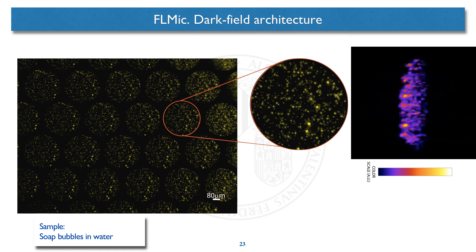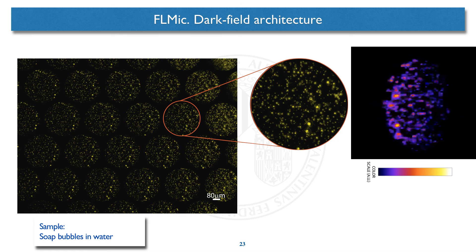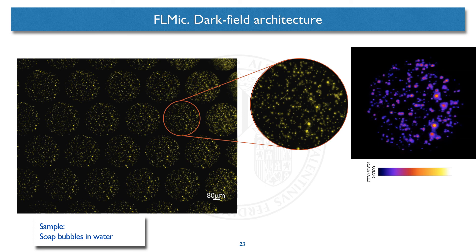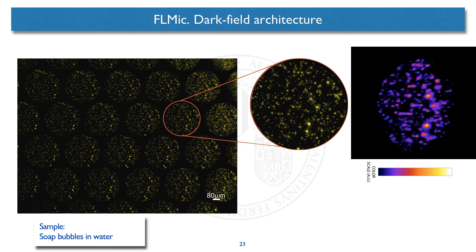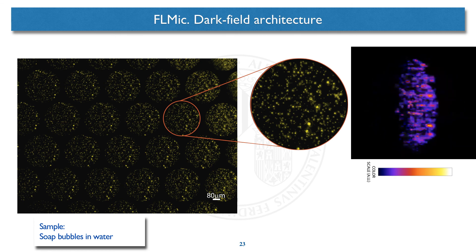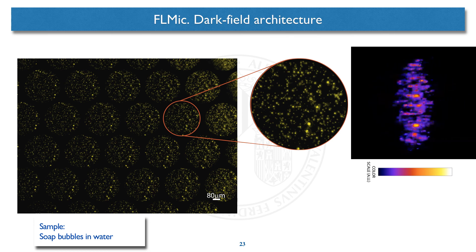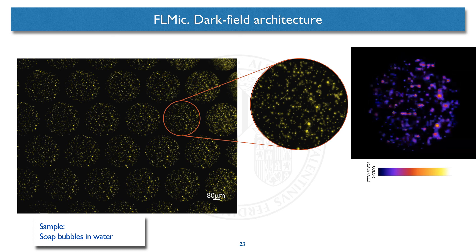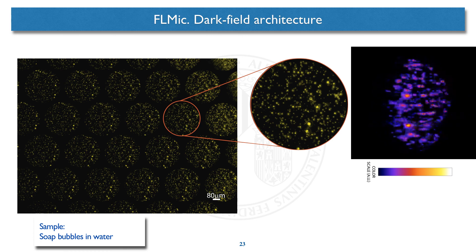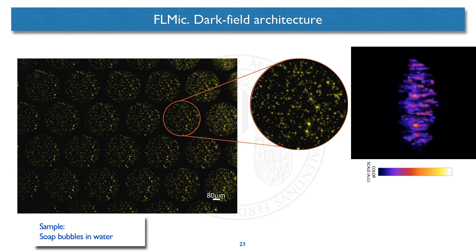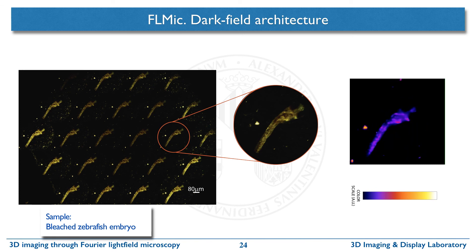As an example of combining dark field and Fourier light field imaging, here we show the result of using a ring illuminator matched with the aperture stop of the native microscope, when our plenoptic eyepiece switches the device to the Fourier light field mode. We use a simple set of soap bubbles in water. These bubbles are naturally transparent, but they acquire high contrast after dark field illumination, and the plenoptic eyepiece allows 3D reconstruction of each bubble and their 3D render. A similar method has also been applied to more interesting biological samples, namely bleached zebrafish embryos.